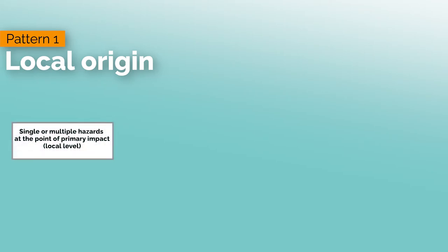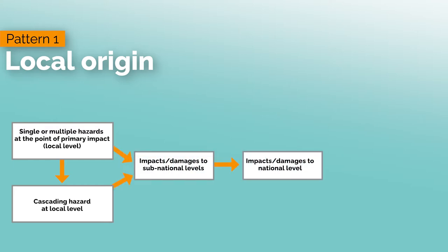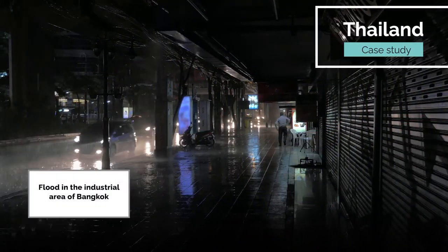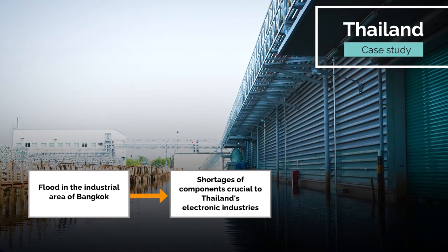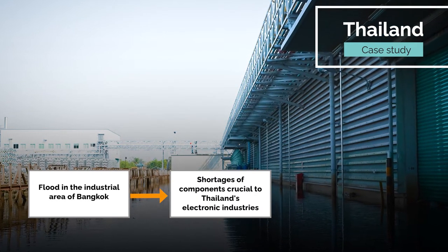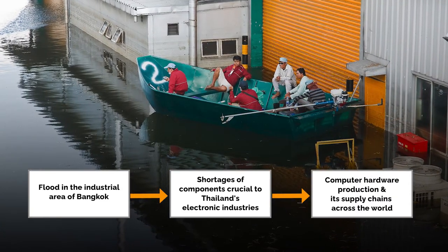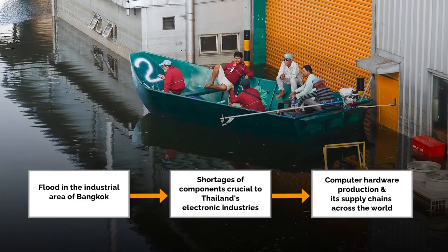The first pattern is of local origin. When single or multiple hazards at the point of primary impact happen at the local level, sometimes a cascading hazard also occurs at the local level. Then there are secondary and tertiary impacts that spread to the sub-national and national levels, and sometimes even to regional and global levels. Like when one of the worst floods in the history of Thailand struck in 2011 and caused shortages of components crucial to Thailand's electronic industries, which in turn affected computer hardware production and its supply chains across the world.